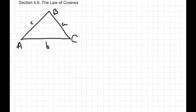The law of sines cannot be used directly to solve triangles if we know two sides and the angle between them, or if we know all three sides. Therefore, we need another formula for dealing with those types of problems. We have the law of cosines.